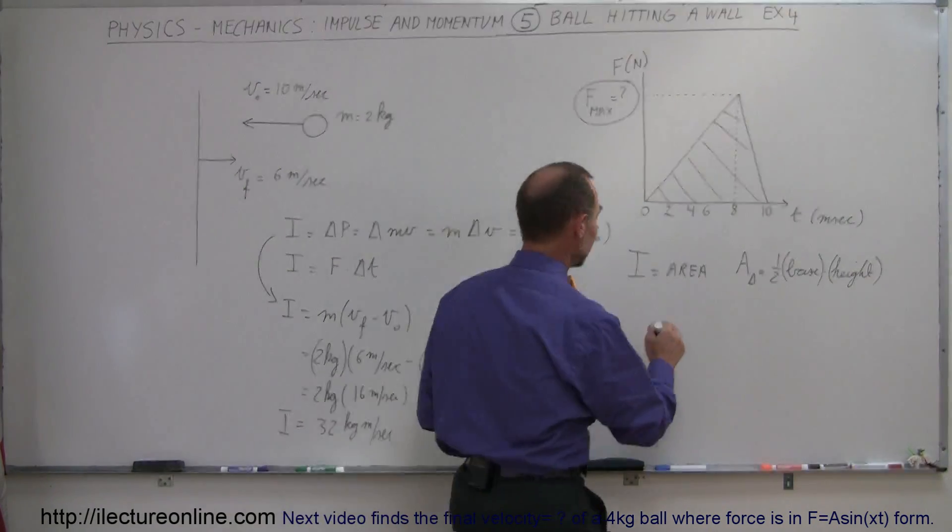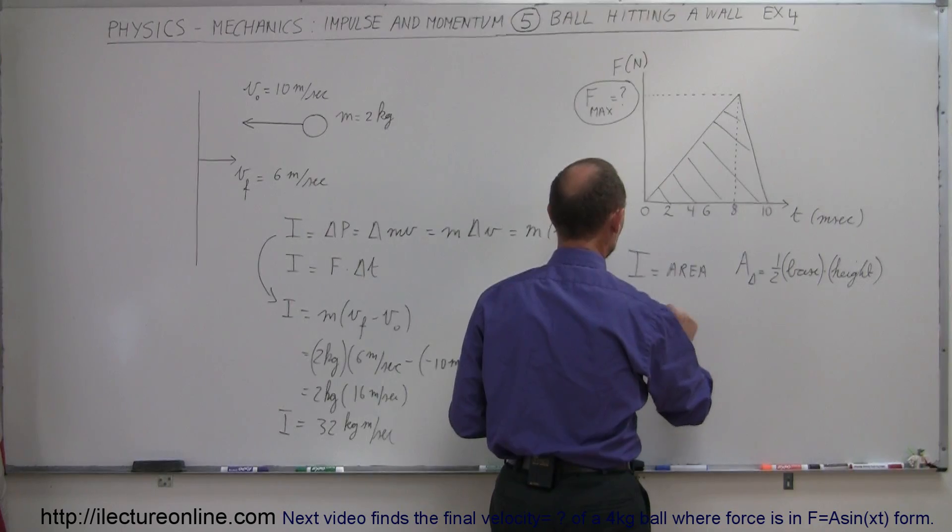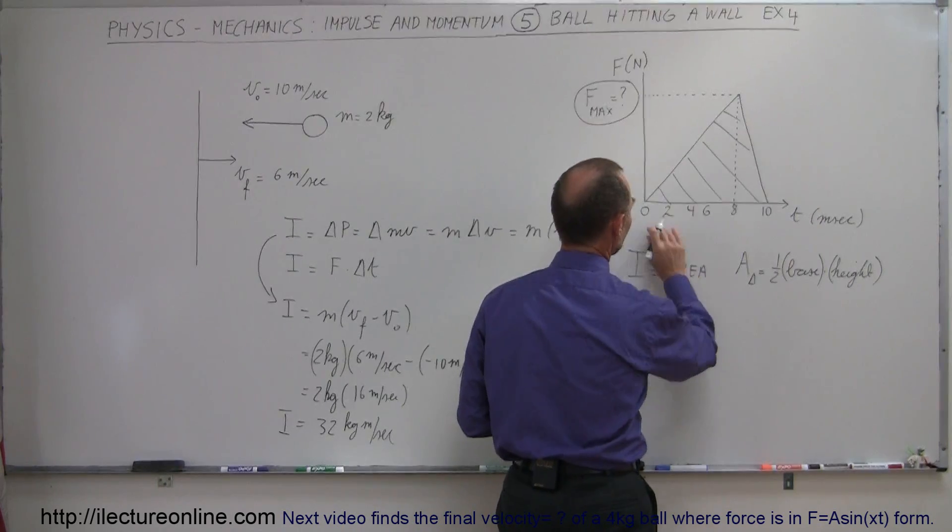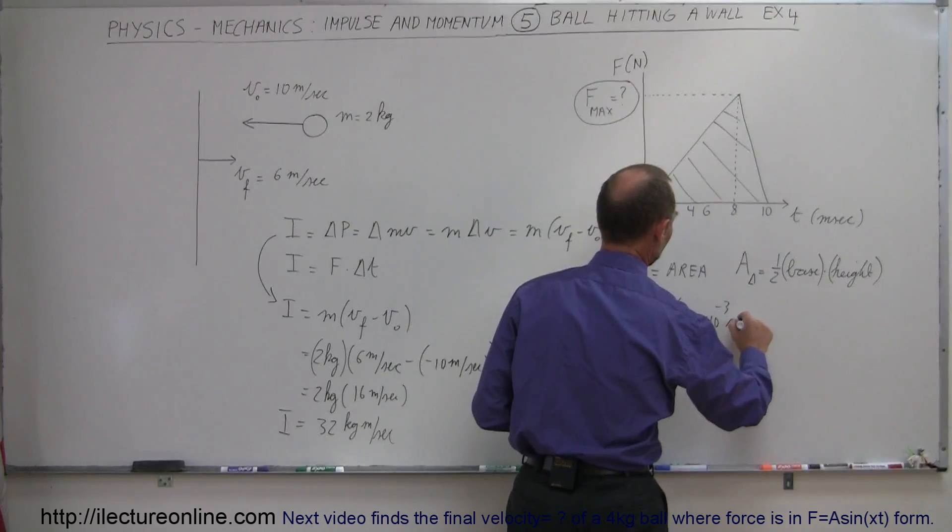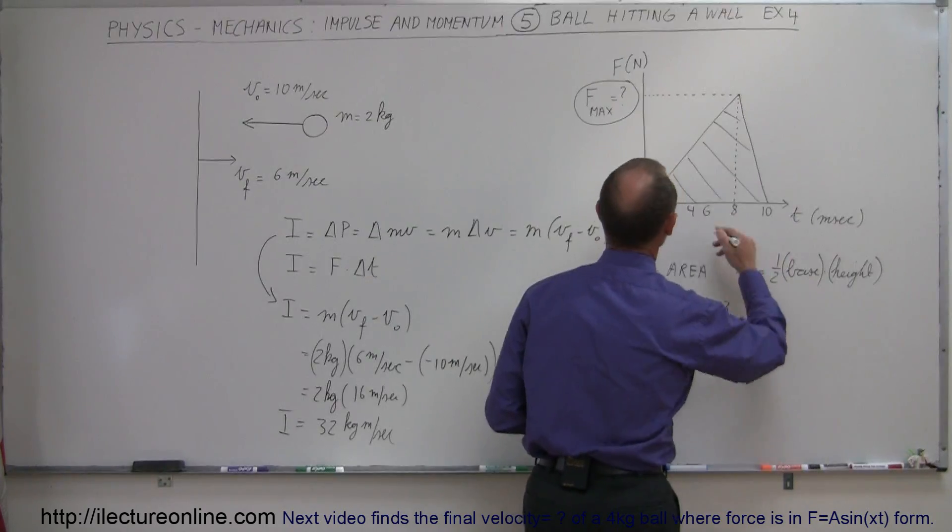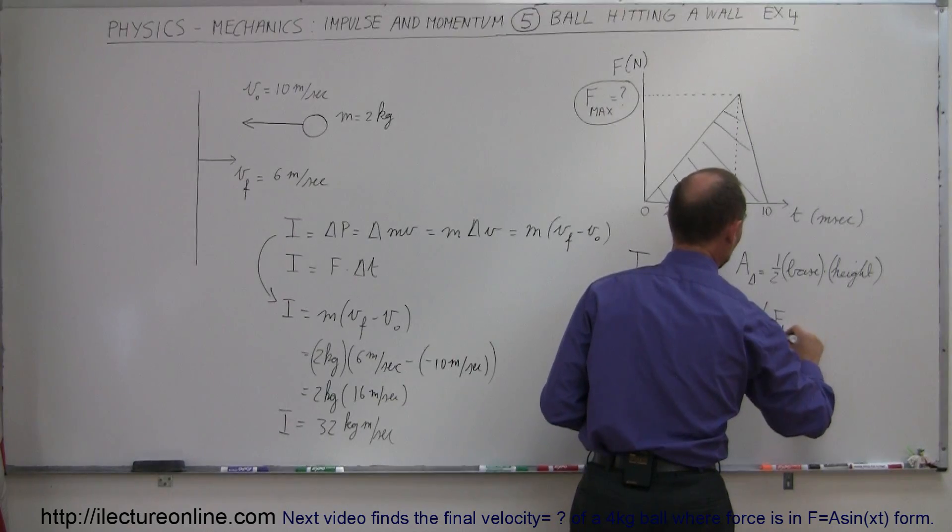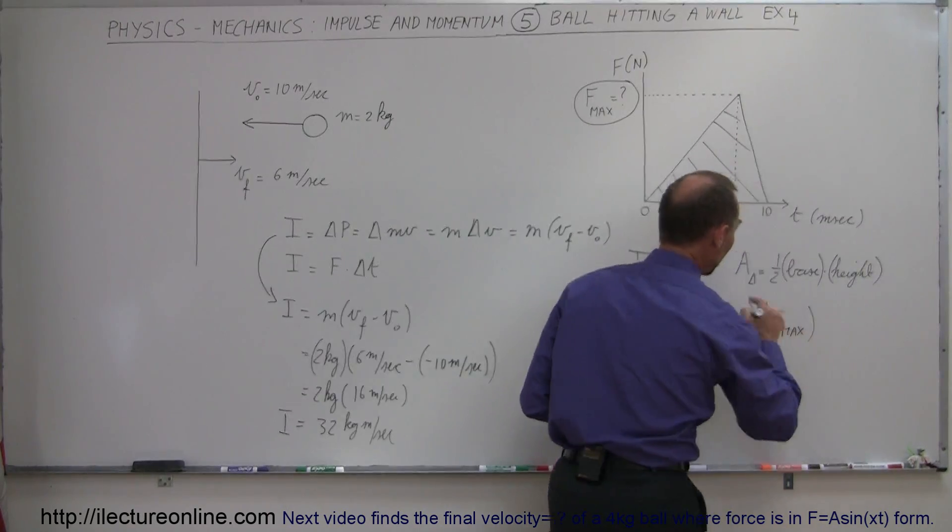All right, so let's go ahead and do that. So impulse, therefore, is equal to one half times the base. The base is 10 milliseconds, 10 times 10 to the minus 3 seconds. And the height, well, that would be the maximum force, F max. And that's what we're looking for.